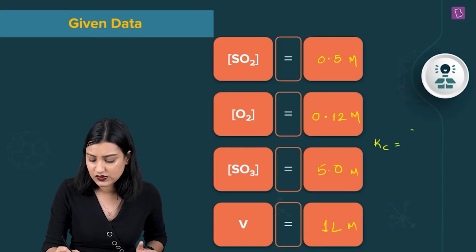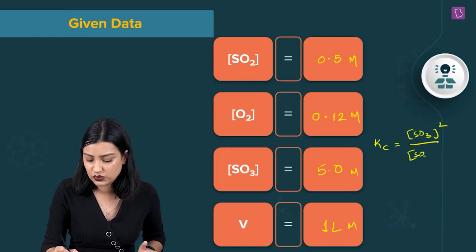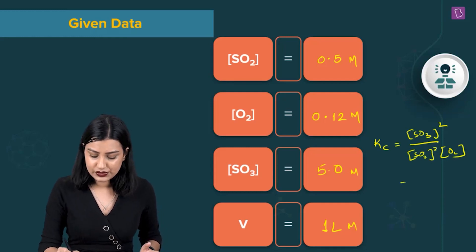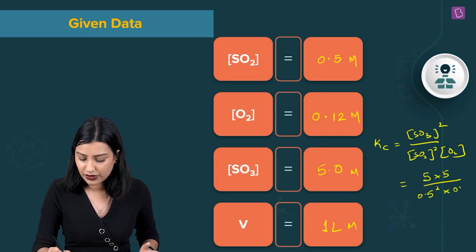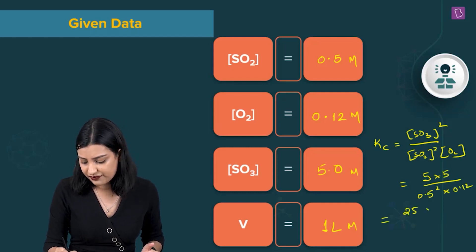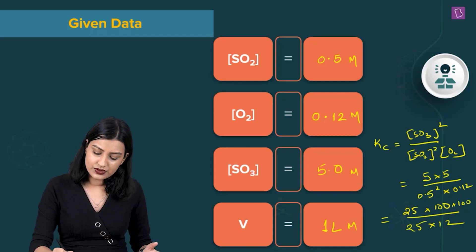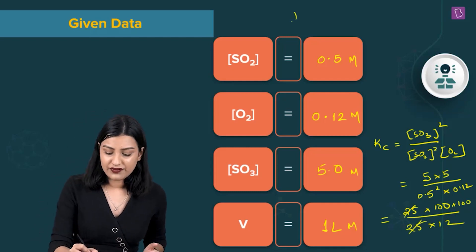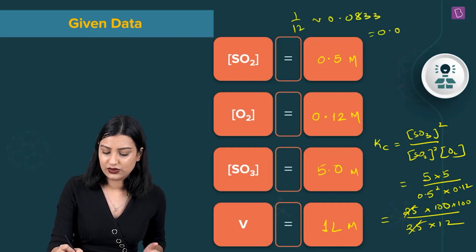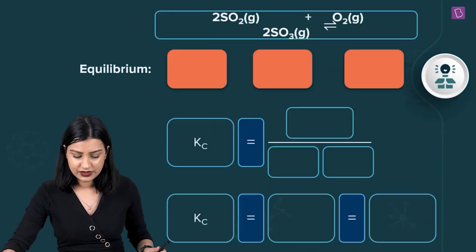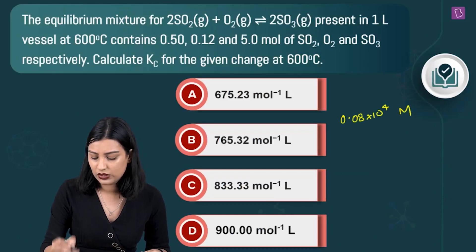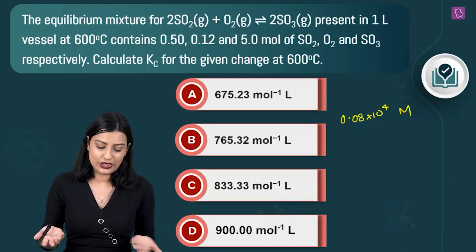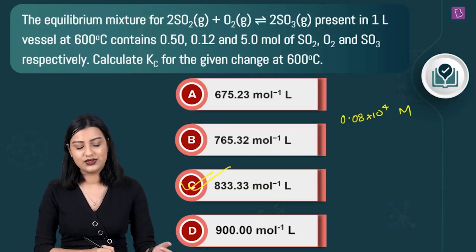Kc = [SO₃]² / ([SO₂]² × [O₂]) = (5)² / ((0.5)² × 0.12) = 25 / (0.25 × 0.12). Simplifying: 25 × 100 × 100 / (25 × 12). The 25s cancel, and 1/12 ≈ 0.0833, giving 0.08 × 10⁴ M. Only option C matches, so option C is the right answer.